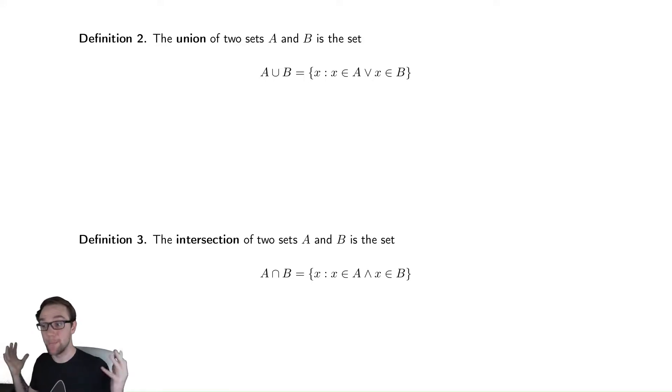Our first way to combine two sets into a new set is the union. This is take all of the things that are in A and all of the things that are in B and make them into one set. So this is a set of every single X where X is either in A or X is in B.